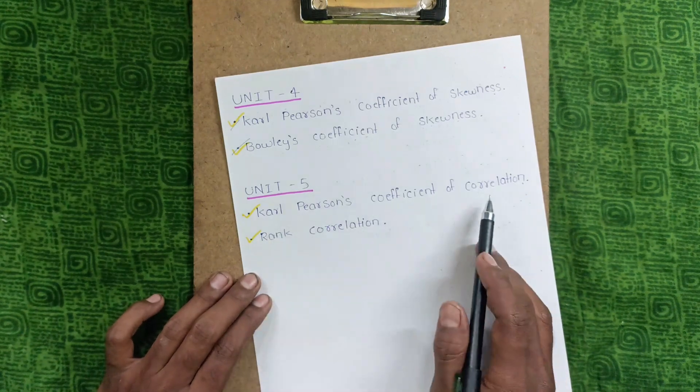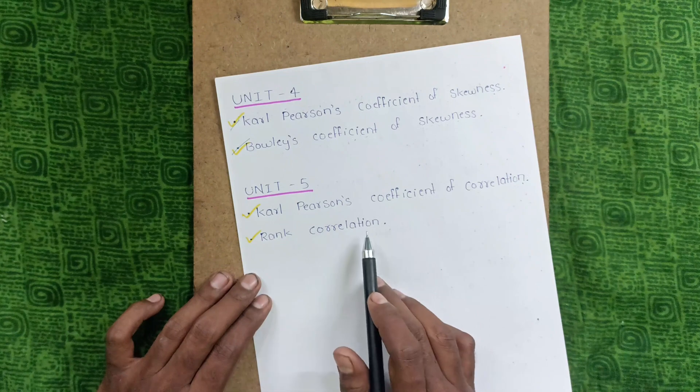Carl Pearson coefficient of correlation and rank correlation are both the most important questions.